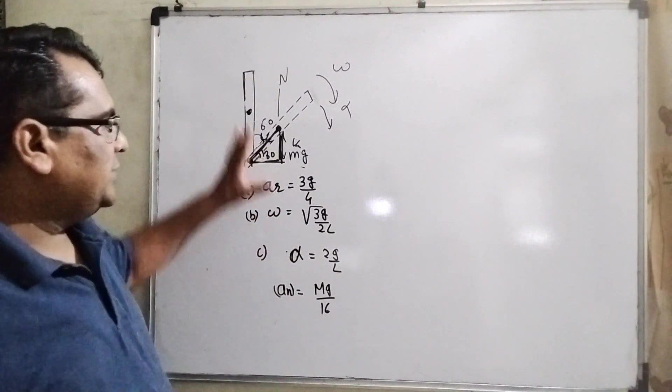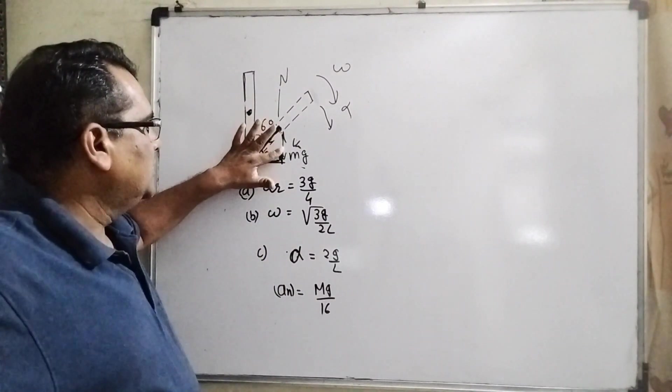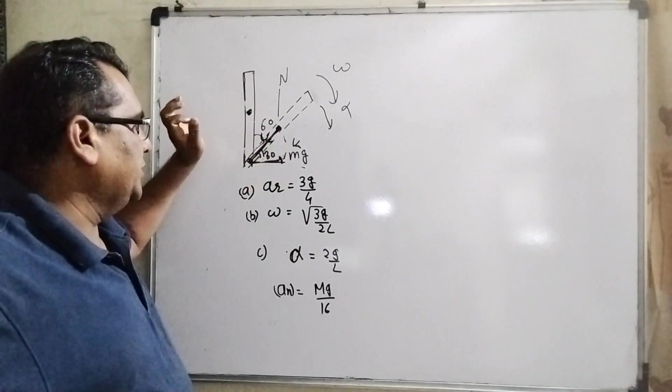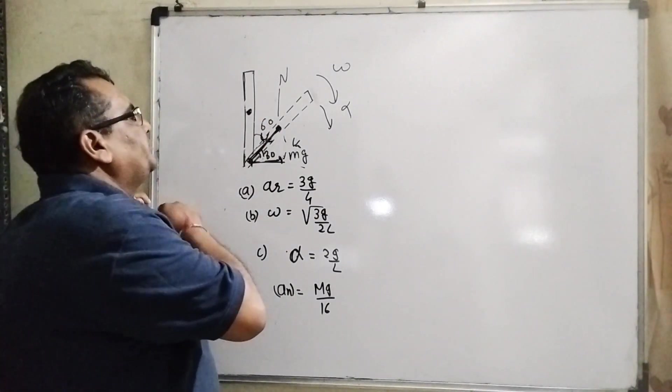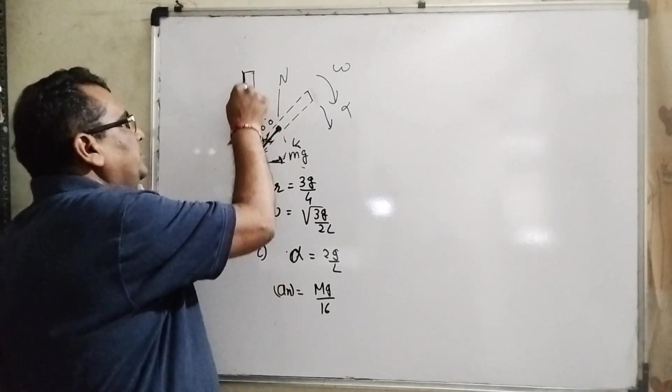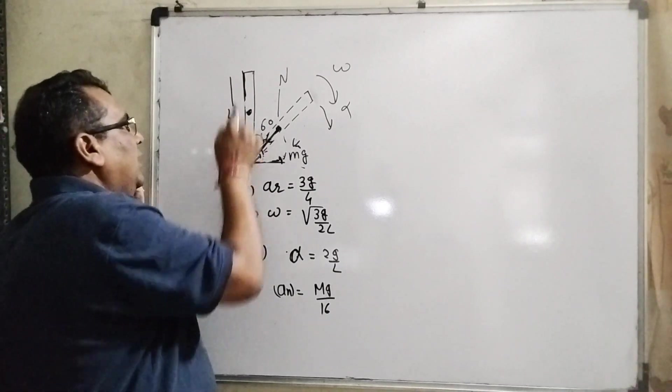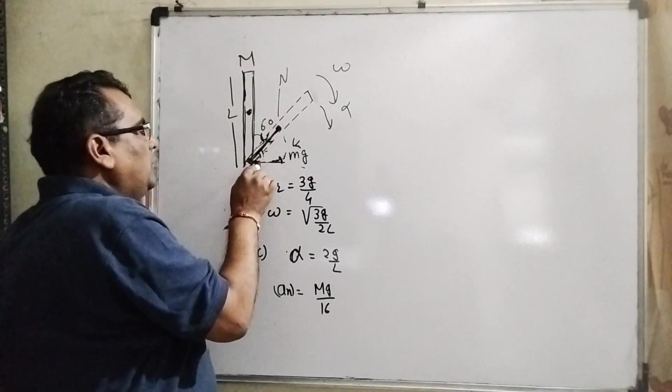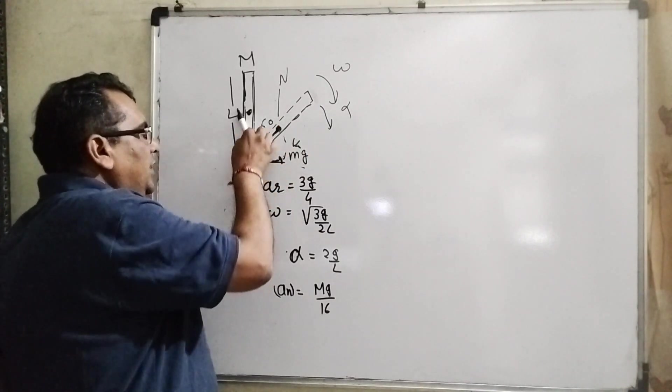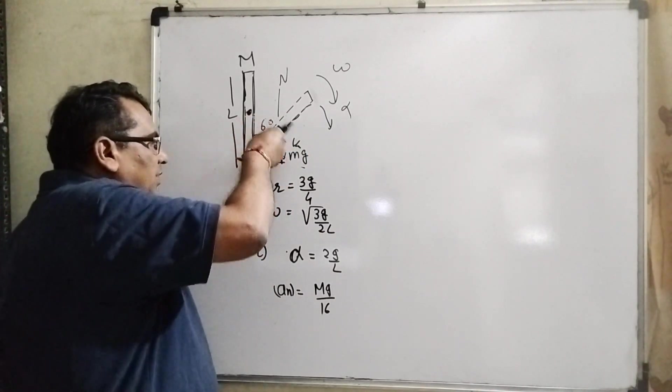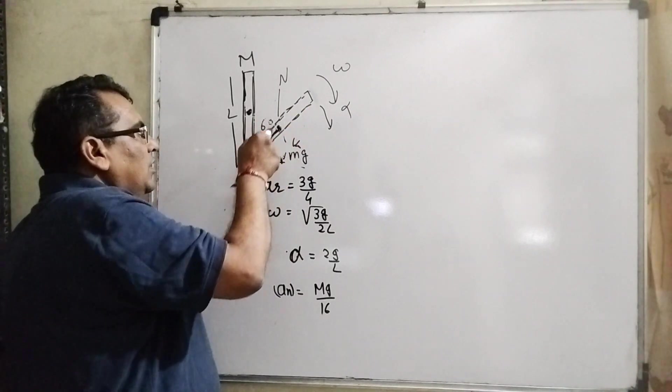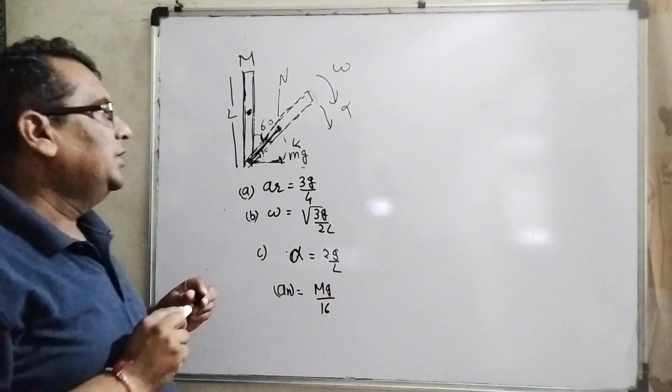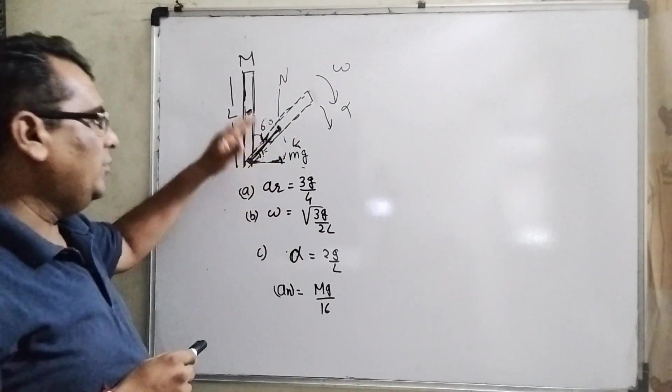Okay, let us first discuss the central points of this question. You have given this rod which has length L and mass capital M. Without slipping, it's rotating or moving like that, making an angle of 60 degrees. In that case we have to find out all these values.